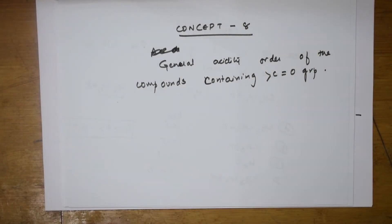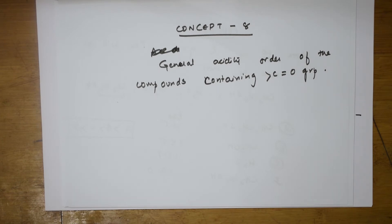Let's come back and do concept 8, where I'll be giving you the general acidity order for compounds containing the C double bond O — right — let it be acetic acid, ketones, amides, peracids, keto esters, and all these compounds. I'll give you the examples also.